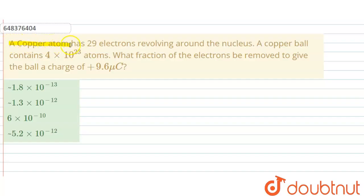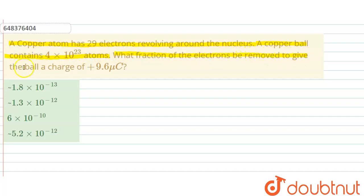In this question, it is given that a copper atom has 29 electrons revolving around the nucleus. A copper ball contains 4 × 10²³ atoms. What fraction of electrons need to be removed to give the ball a charge of +9.6 microcoulombs?